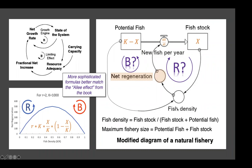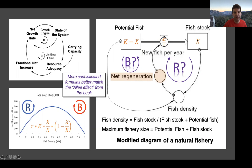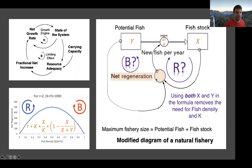This whole exercise allows us to see that there really are two feedback loops here. There's a feedback loop from the fish stock going into fish density driving growth — a reinforcing loop — and there's a feedback loop that depletes potential fish, reducing new fish per year. This formula makes that clear. Drawing it out this way, and asking what happens as x increases or as k minus x increases, helps show that we have a balancing loop and a reinforcing loop.